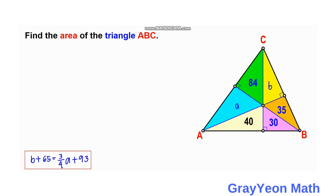Next, we focus on the light yellow triangle and the orange triangle. They have the same height. The sum of the 40 and 30 triangles is 70, and the orange is 35. Since they share the same height, the base of the 70-area region is twice that of the 35-area region. So if the orange's base is X, the combined base is 2X.